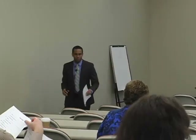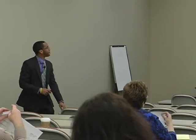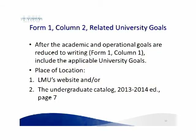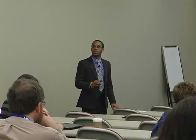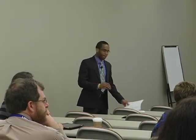The next two slides will be relatively straightforward. After the academic and operational goals are reduced to writing, Form 1, Column 1 — include the applicable university goals. In terms of Form 1, write in Column 2. You can find the university goals on LMU's website or the undergraduate catalog, 2013-2014 edition, precisely on page seven. Does anyone have any questions so far?